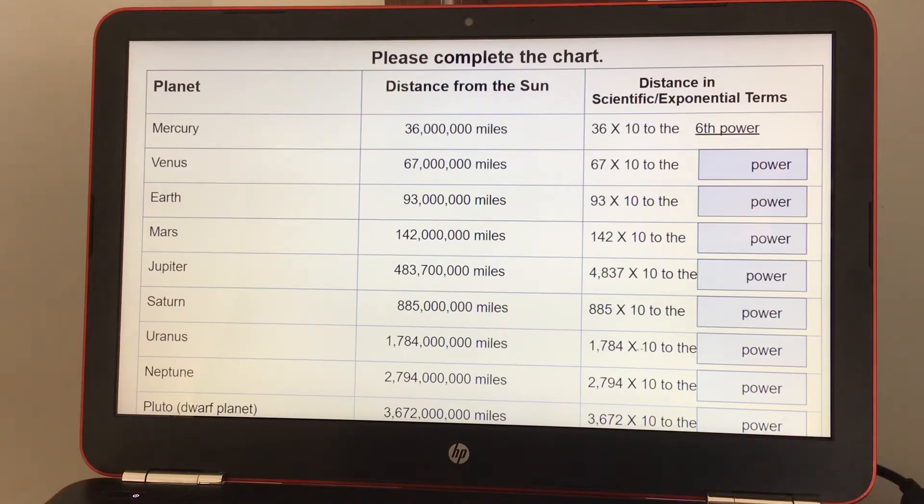Uranus is 1,784,000,000 miles away from the Sun. Neptune is 2,794,000,000 miles away from the Sun. And Pluto is 3,672,000,000 miles away from the Sun.